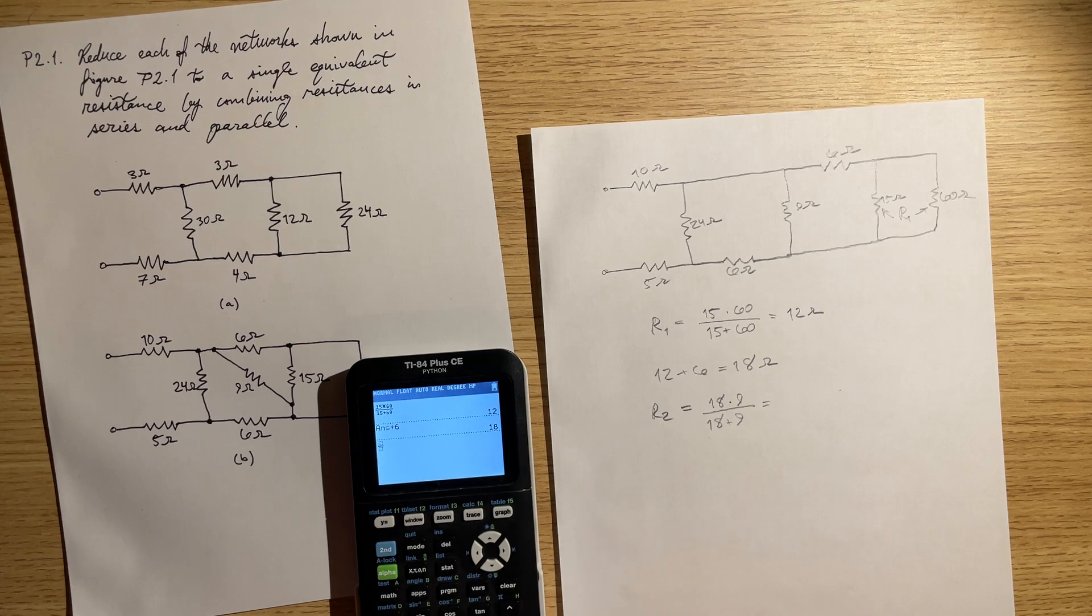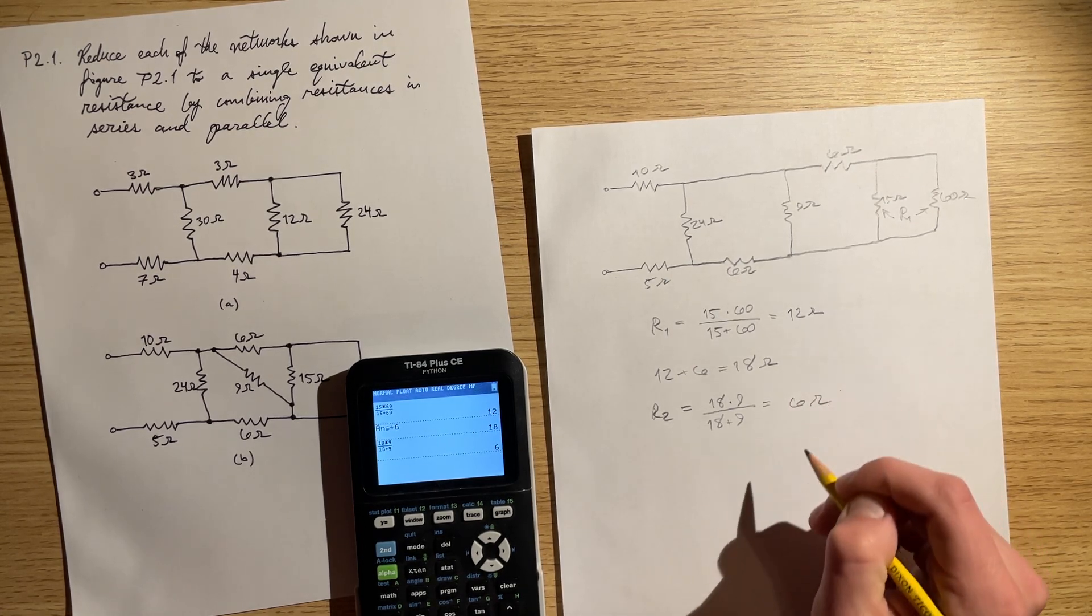18 times 9, 18 plus 9, it's going to be 6 ohms.